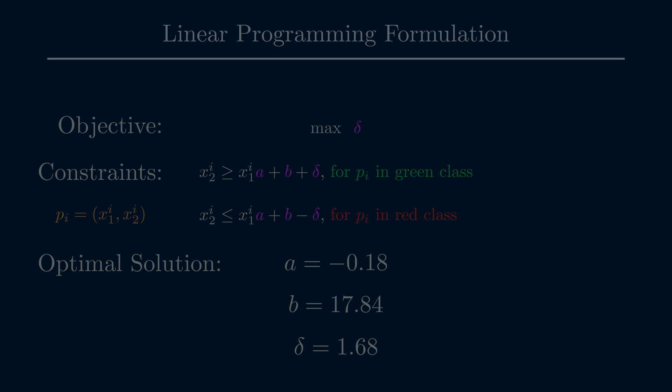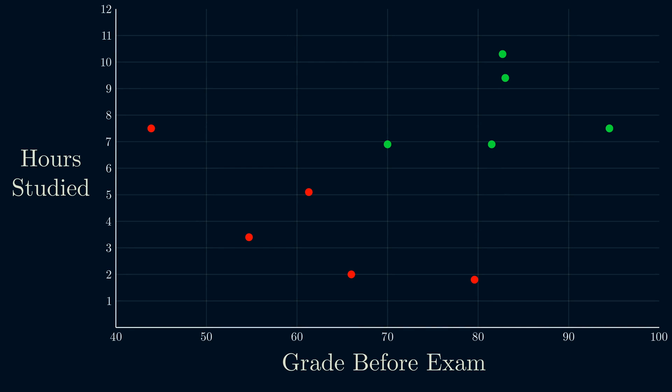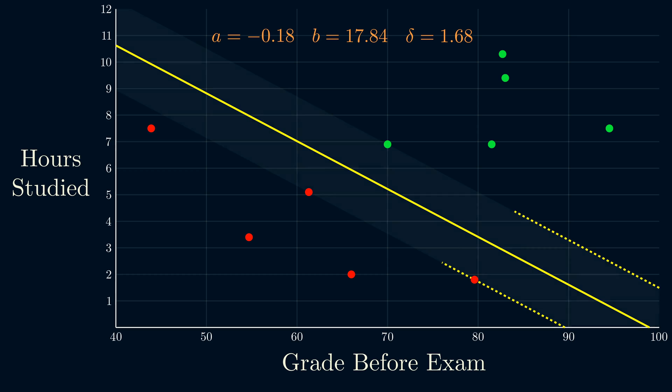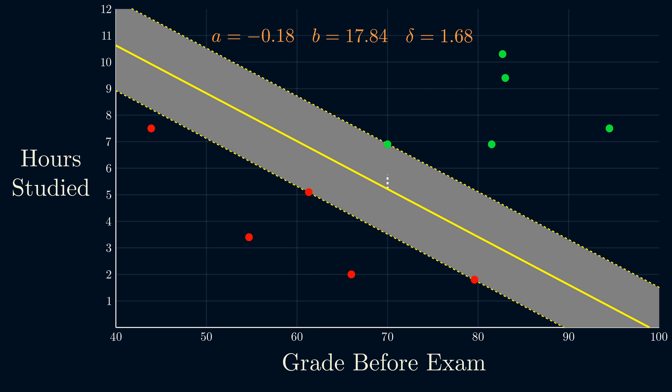Now, let's take the solution and plot the corresponding line. This is the buffer region. The vertical distance of the buffer corresponds to the delta in the solution.